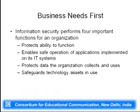Business needs first. Information security performs four important functions for an organization: protect the ability to function, enable safe operation of applications implemented on IT systems, protect data the organization collects and uses, and safeguard technology assets in use. These are the four main functions that information security performs for a particular organization.